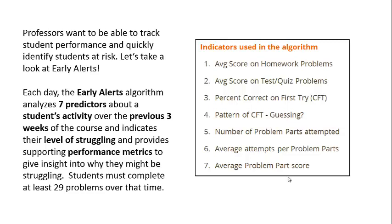Students must complete at least 29 problems over that period of time. The indicators used in the algorithm are the average score on homework problems, the average score on test and quiz questions, the percentage correct on the first try, the pattern of guessing, the number of problem parts attempted, the average attempts per problem part, and the average problem part score.